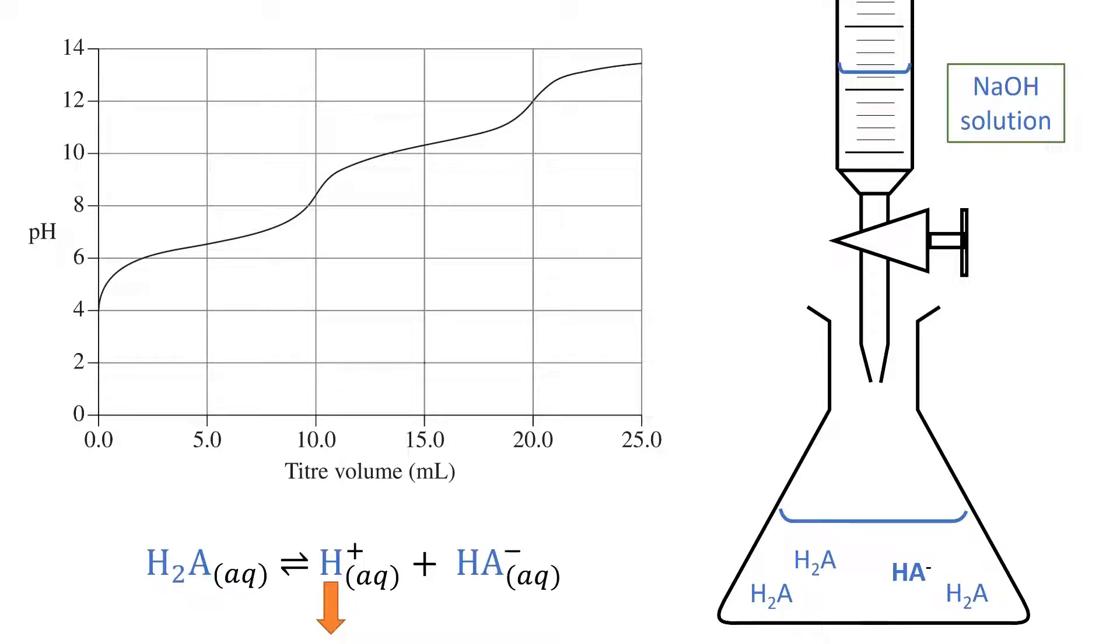With a reversible reaction like this, we use Le Chatelier's principle to predict that this change will cause the forward reaction to be favoured. The effect of this will be to reduce the H2A molecules and increase the hydrogen and HA- ions.